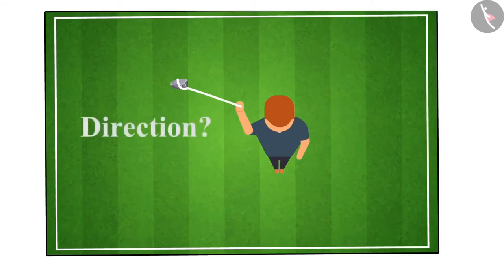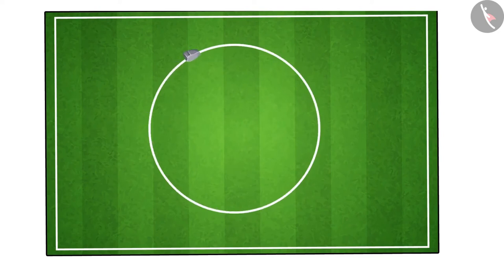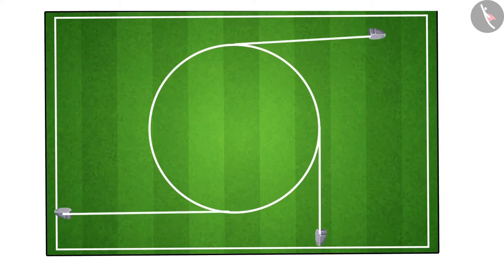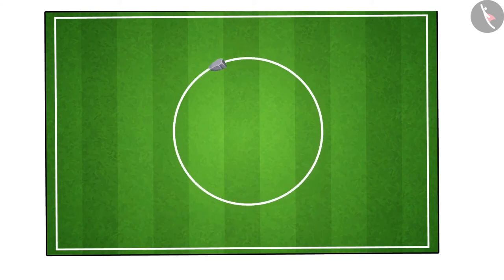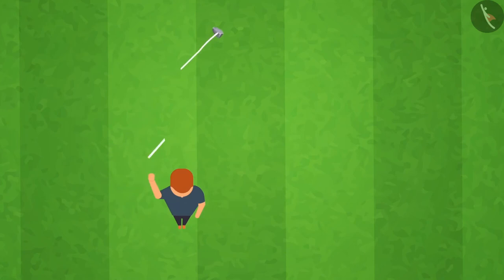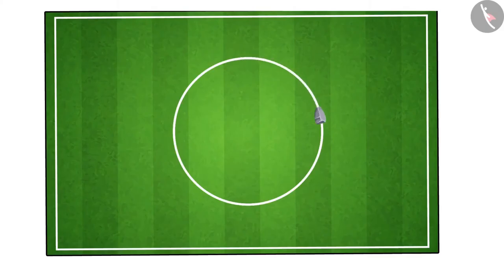Can you determine the direction of the stone after it is released? Repeat the experiment by releasing the stone at different positions along the circular path and observe its direction. On careful observation, the stone moves along a straight line tangential to the circular path — this occurs because the stone continues in the direction it was moving at the instant of release, showing that direction changes at every point.